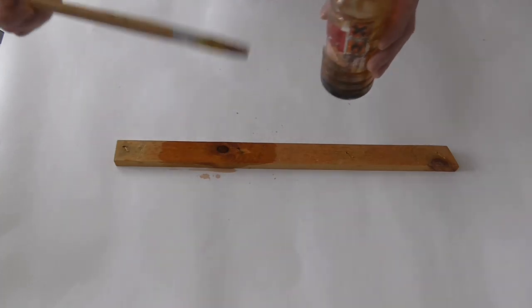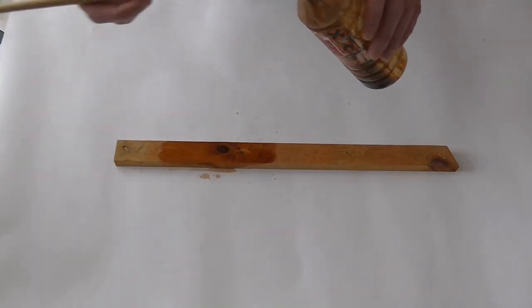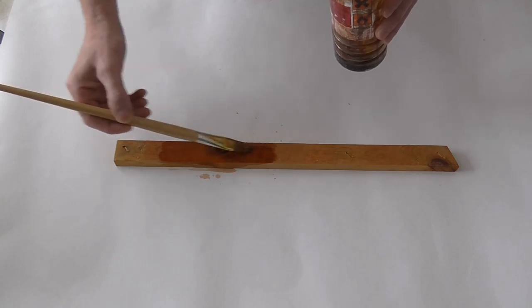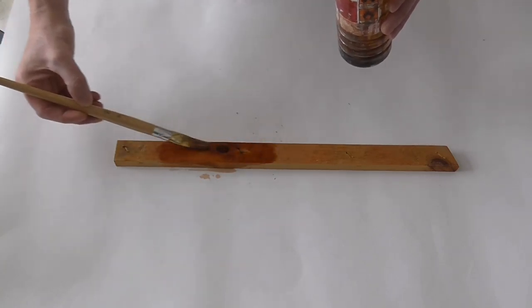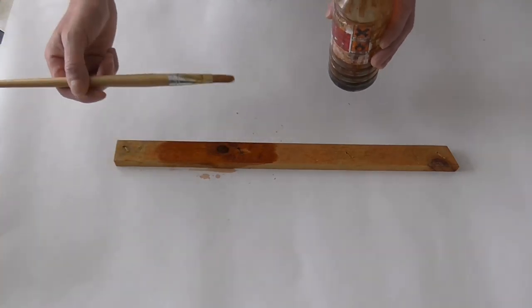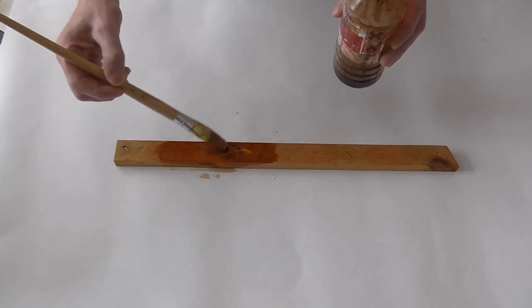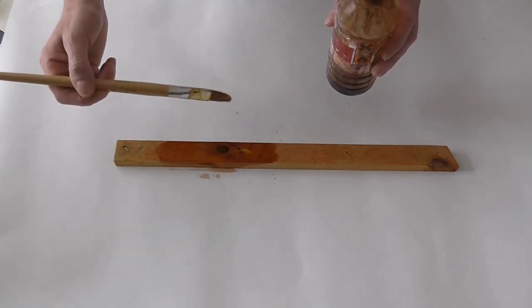And then apply a second coat. And what you're trying to do is just lay it on nicely. You don't want to be scrubbing it about because knotting is a reversible coat, so basically if you do too much scrubbing about, all you'll be doing is working up the coat that you've already put on.